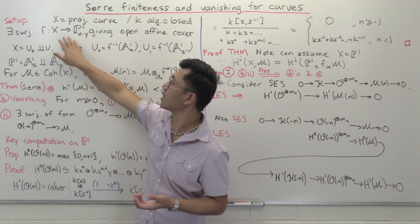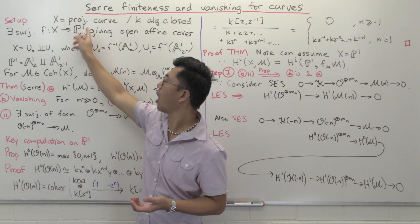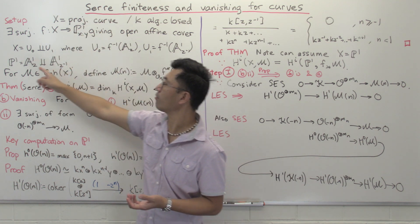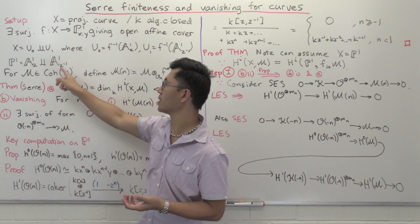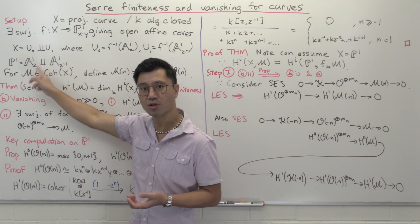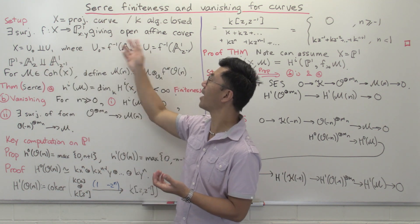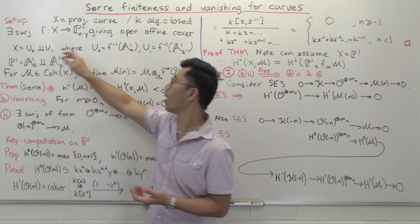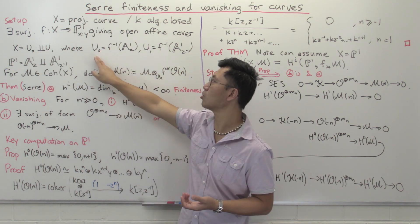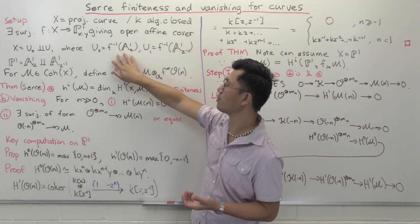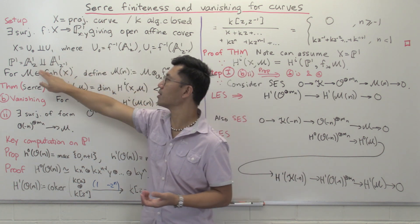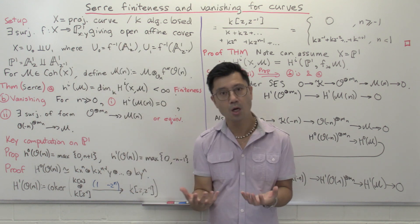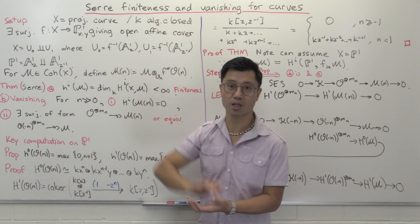Given that, you can actually use the standard open affine cover of P1. If we write P1 as A1_z and A1_{z^{-1}}, the inverse images of these will give you an open affine cover of X. So X is U0 union U1, where these open affine sets U0 and U1 are just the inverse images of A1_z and A1_{z^{-1}}. That's what we need to compute cohomology on this projective curve X.